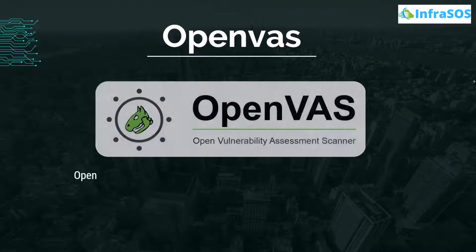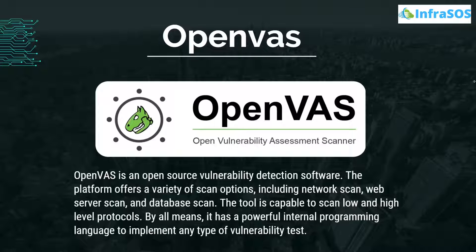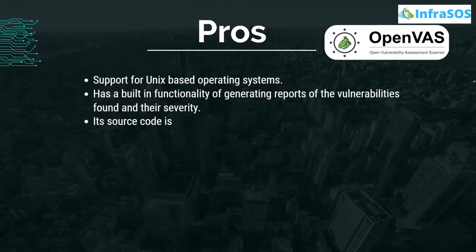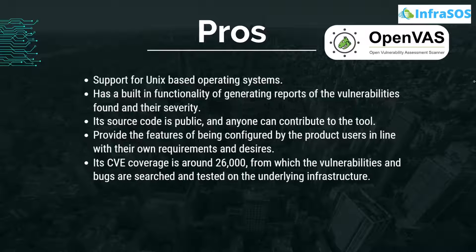At number eight we have OpenVAS — Open Vulnerability Assessment Scanner — which is open-source vulnerability detection software. The platform offers a variety of scan options including network scan, web server scan, and database scan. It is capable of scanning low and high level protocols and has a powerful internal programming language to implement any type of vulnerability test. Pros include support for Unix-based operating systems, built-in functionality for generating reports of vulnerabilities found and their severity, and public source code that anyone can contribute to.